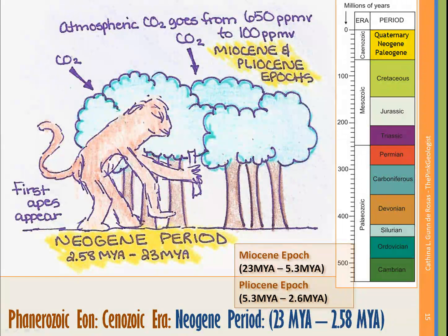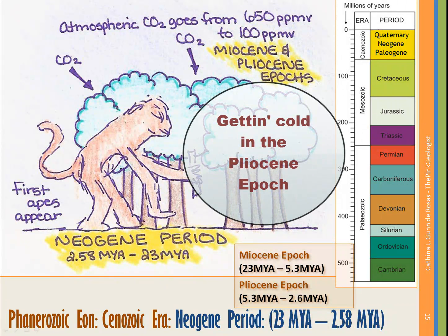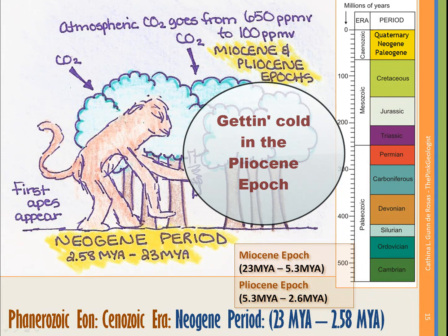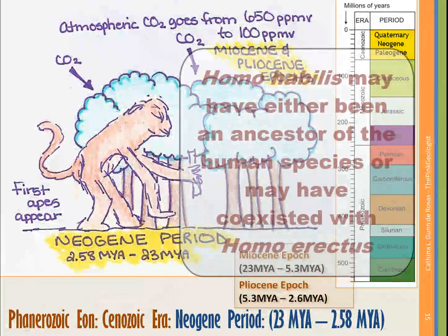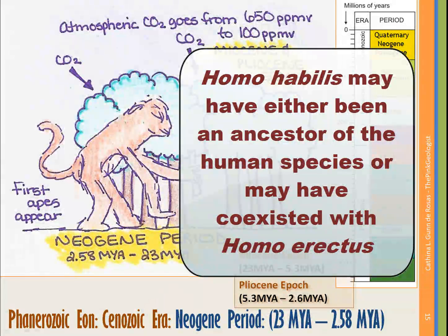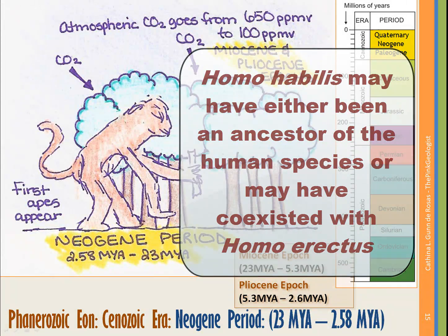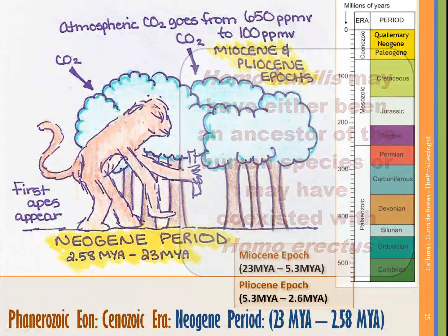In the Pliocene epoch, from about 5.3 to 2.6 million years ago, the climate persists cool and dry. Icehouse conditions begin to intensify, and the present quaternary ice age begins about 2.58 million years ago at the end of the Neogene period. Here we see Homo habilis, a tool-wielding possible human ancestor about half our size, show up. There is dispute as to whether we are directly related to this species, but this is where it appears — here in the Pliocene epoch.